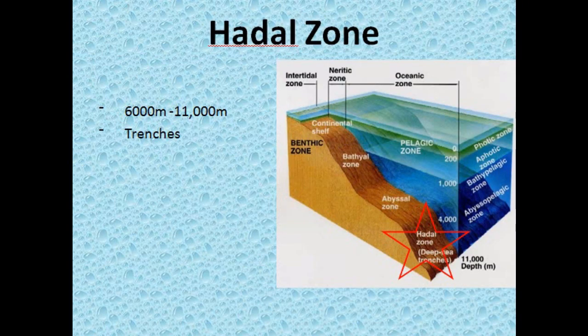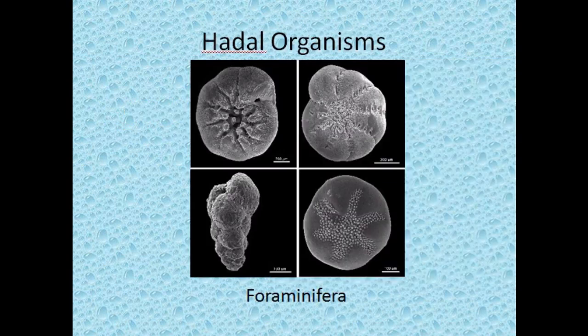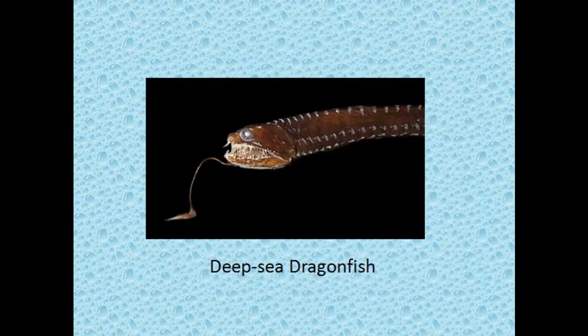The deepest benthic zone is the hado zone. The hado zone is 6,000 to 11,000 meters deep, and this is where you find deep sea trenches. Common hado organisms include the foraminifera and the deep sea dragonfish.